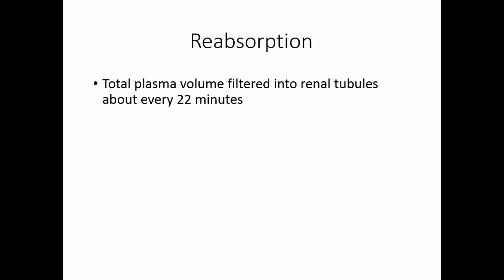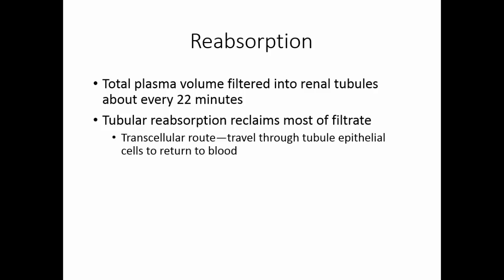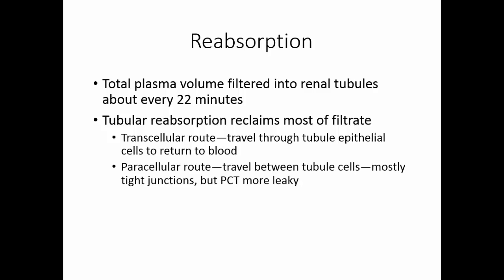Now that we've completed the process of filtration and made a filtrate, we have to move to the second step of urine formation: reabsorption. Your total plasma volume is filtered into your renal tubules about every 22 minutes. Tubular reabsorption reclaims most of that filtrate. Some stuff moves through the epithelial cells of the tubules — this is called transcellular reabsorption. Paracellular reabsorption occurs if the molecules can travel between the tubule cells.